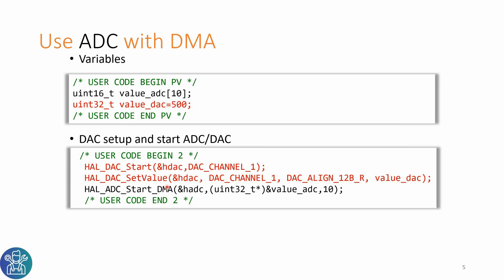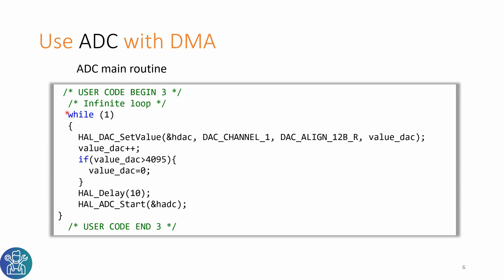In USER_BEGIN2 we'll start the DAC and set the value. For the ADC, we'll set the DMA — this is where the values will be placed and this is the amount of values we're going to put in. In the while loop, we'll set the DAC and increase the DAC. If the DAC is over 4095, we'll change it to 0. We'll do HAL delay, and this is the HAL_ADC_Start. Every time HAL_ADC_Start is called, the DMA will be triggered and will automatically do an ADC conversion.